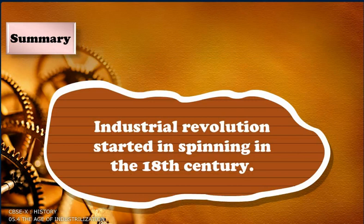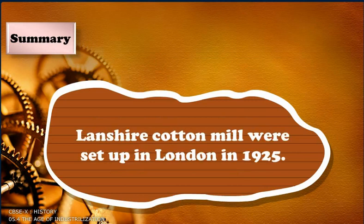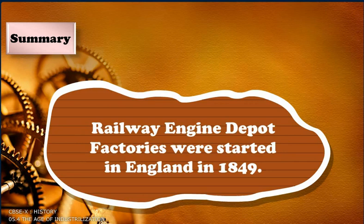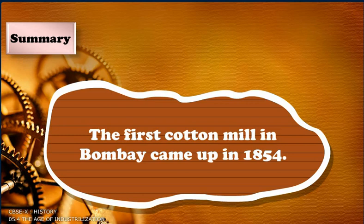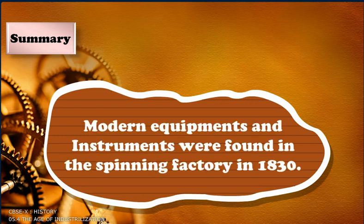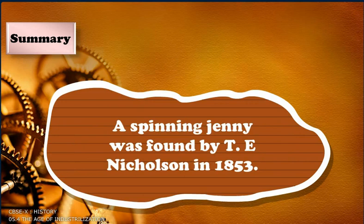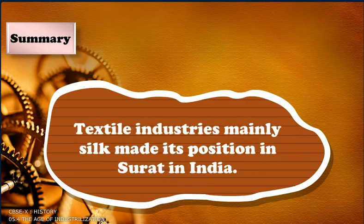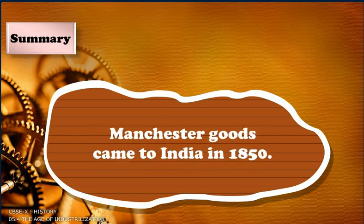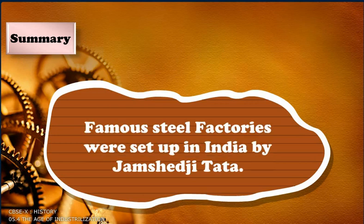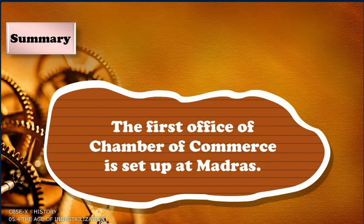Summary. The Industrial Revolution started in spinning in the 18th century. Lancashire cotton mills were set up in London in 1925. Railway engine depot factories were started in England in 1849. The first cotton mill in Bombay came up in 1854. Modern equipment and instruments were found in the spinning factory in 1830. New iron industries were set up in northeast England. A spinning jenny was found by T.E. Nicholson in 1853. Textile industries, mainly silk, established their position in Surat in India, becoming a major silk trading centre. Manchester goods came to India in 1850. Famous steel factories were set up in India by Jamsetji Tata. The first office of the Chamber of Commerce was set up at Madras.